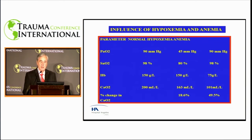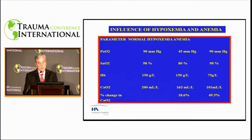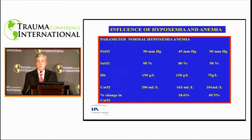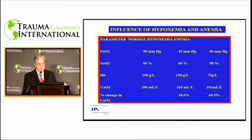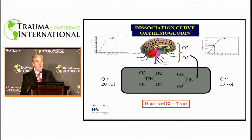Hypoxemia and anemia must be interpreted differently. In anemia, pressures don't change. In hypoxemia, oxygen pressure and saturation drops, the content drops, and the amount of tissue oxygen drops as well.